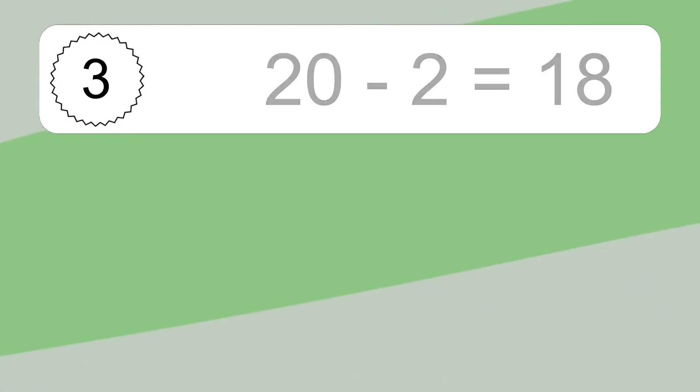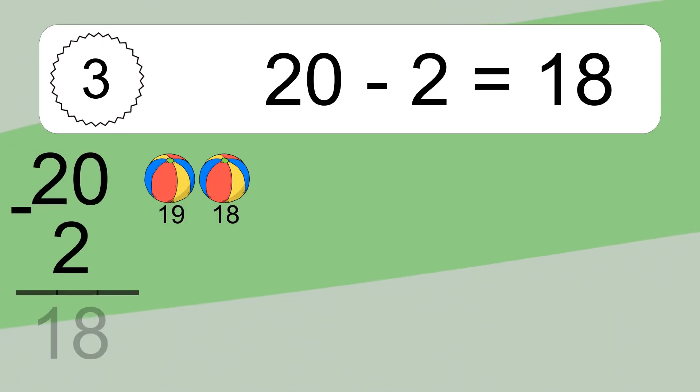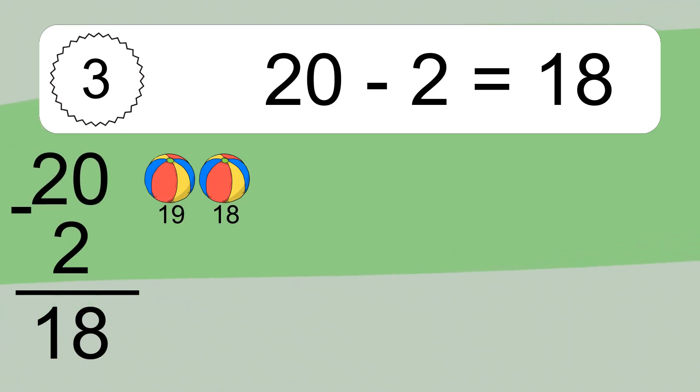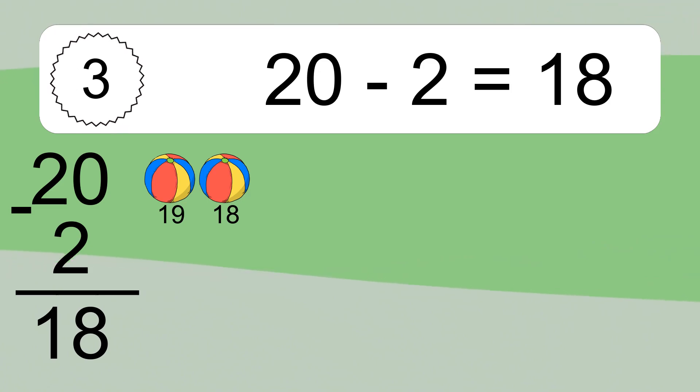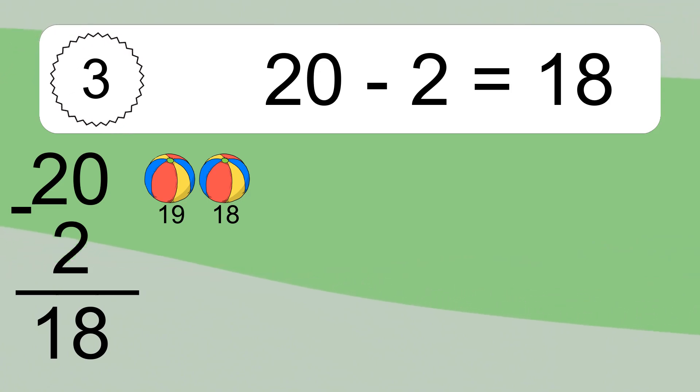20 minus 2 equals what? 20 minus 2 equals 18. Let's count it. 19, 18.